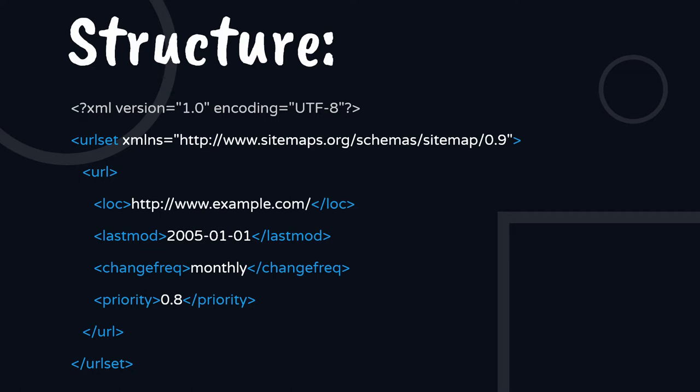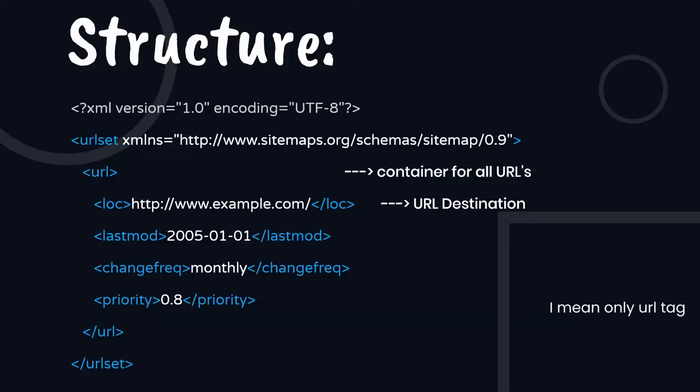This is the basic schema we define. As you can see, it looks a bit like HTML itself — you just start with a tag and close with a forward slash. The xmlns, which is the namespace, is a protocol standard that you must specify; otherwise it may not work. The url tag serves as a container for all the URLs you mention, and then it's the location — called the url destination — that you define inside.